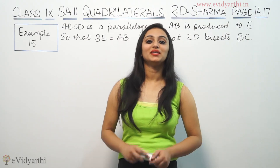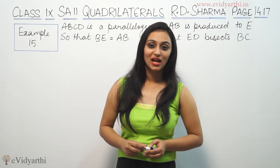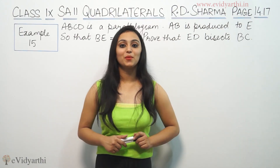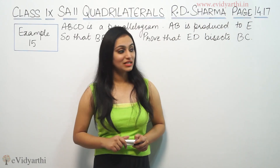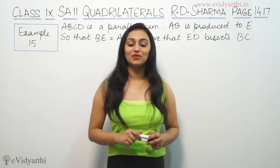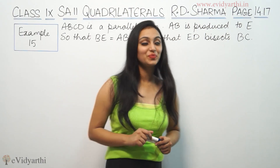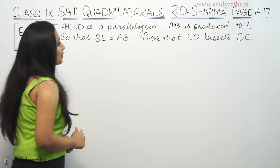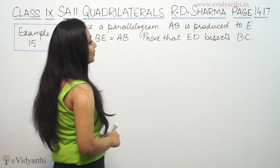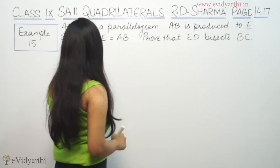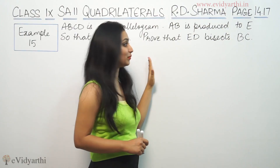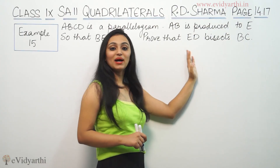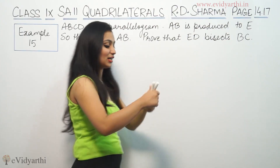Hi, this is Khushbu with another question of 40 laterals. This is example number 15 from page number 14.17 from Adi Sharma. This says ABCD is a parallelogram. AB is produced to E so that BE is equal to AB. We have to prove that ED bisects BC.